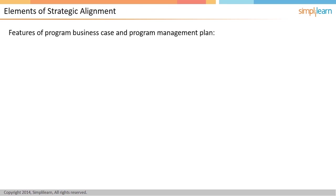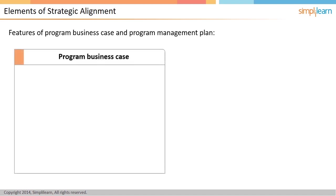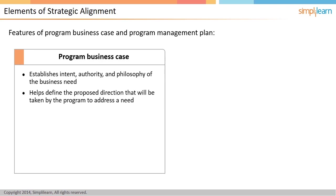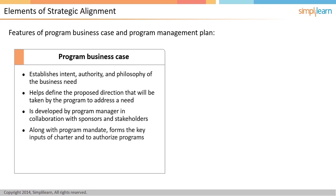Having understood what strategy is and how it gets manifested, we will now understand how a program aligns itself to the strategy. We will start with looking into specific processes and artifacts that result in this alignment. The business case provides an indication about the intent, the authority, and philosophy behind the program. Its basic purpose is to establish why the program is needed or being proposed. The program manager may participate in the creation of the business case in collaboration with the program sponsor and various stakeholders. The business case, along with the executive mandate to start the program, forms key inputs for the establishment of the program charter. Throughout the life of the program, the validity of the business case must be reviewed to ensure it remains in line with the strategy.